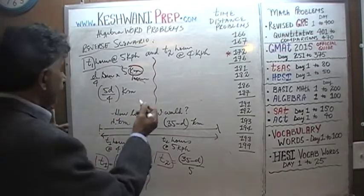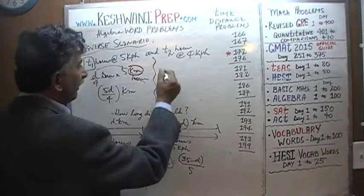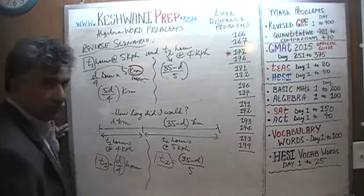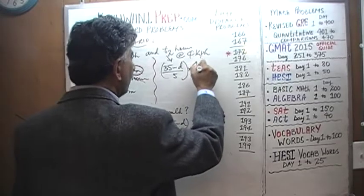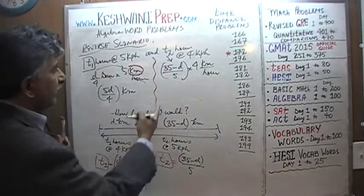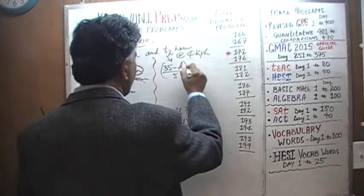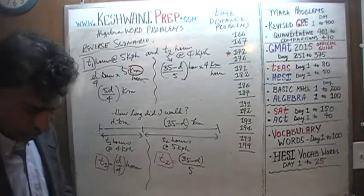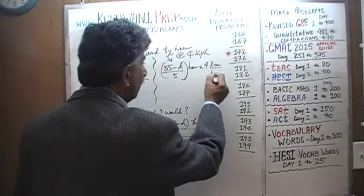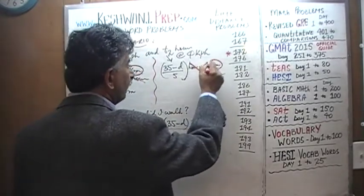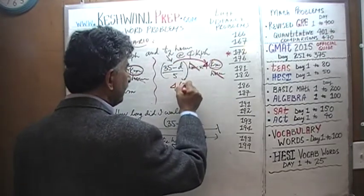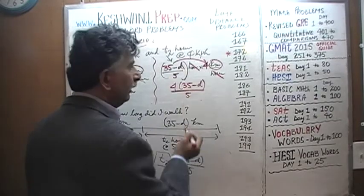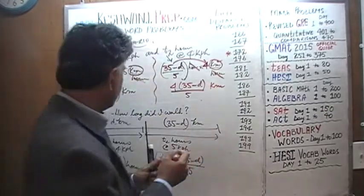Similarly, for the second part we go t2 hours at 4 km/h, where t2 = (35 − d)/5. So the distance is (35 − d)/5 × 4 = 4(35 − d)/5 kilometers. The unit of hours drops out and we're left with kilometers. That's our expression for the second segment in the reverse scenario.